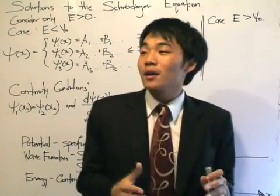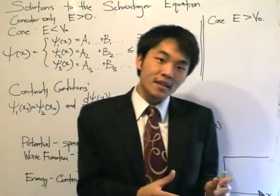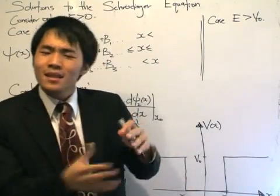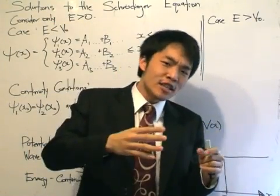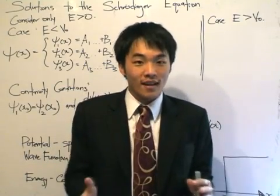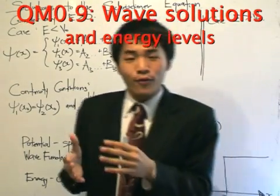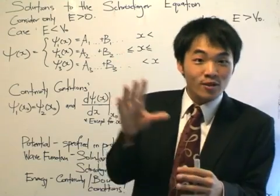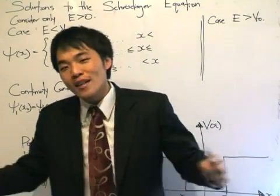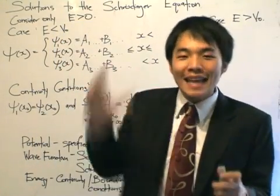Hey guys. Last lesson we left off talking about the solutions of the Schrödinger equation — how we know that it gives us two linearly independent solutions. But really it's more about using this perceptive eye of identifying when the energy and the potential, when we compare them, give a change of sign for all regions of x. Today we're going to go forward in that line of thought and see how, once obtaining the solutions for basically all energy levels and for all ranges of the x domain, what conditions we can apply to get the final solution.